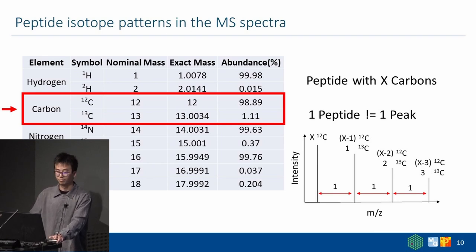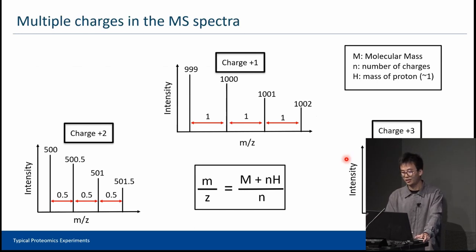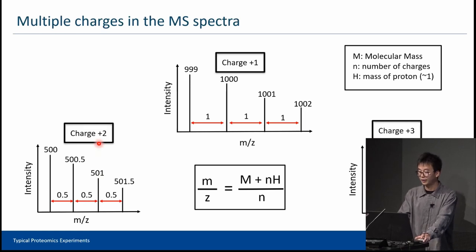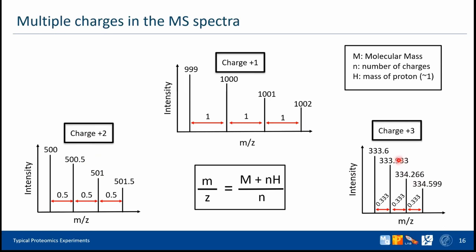What else? During ionization, peptides can be multicharged instead of just charge 1. According to this formula—remember this super important M over Z—Z stands for the number of charges. You can see a lot of peaks are created because of multiple charges. When there's charge 2, the distance between the isotopic peaks will be 0.5 instead of 1. For charge 3, you have isotopic peaks with distance 0.333 instead of 1. It's not that easy to interpret peptide spectra, even in a very ideal situation.